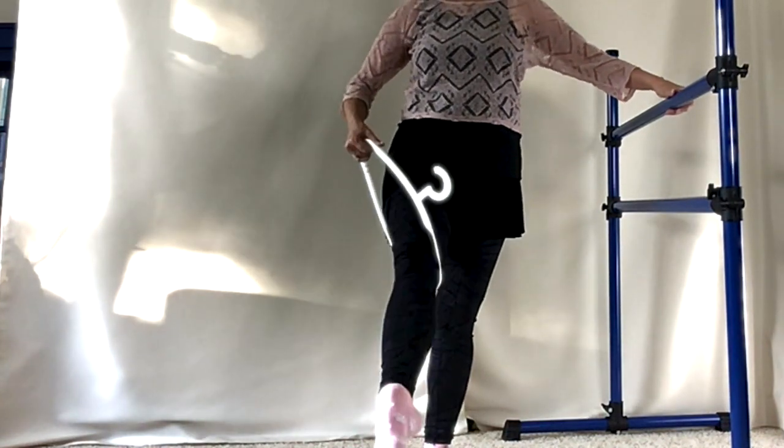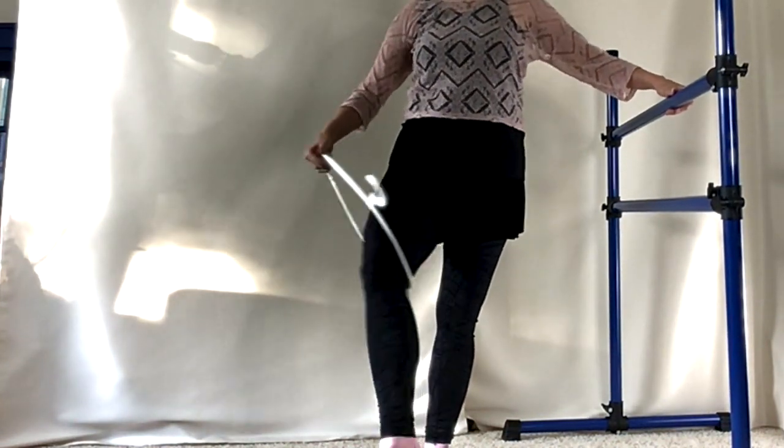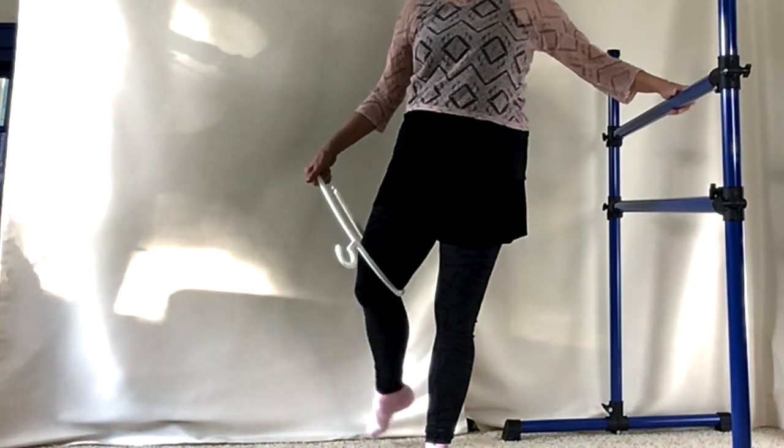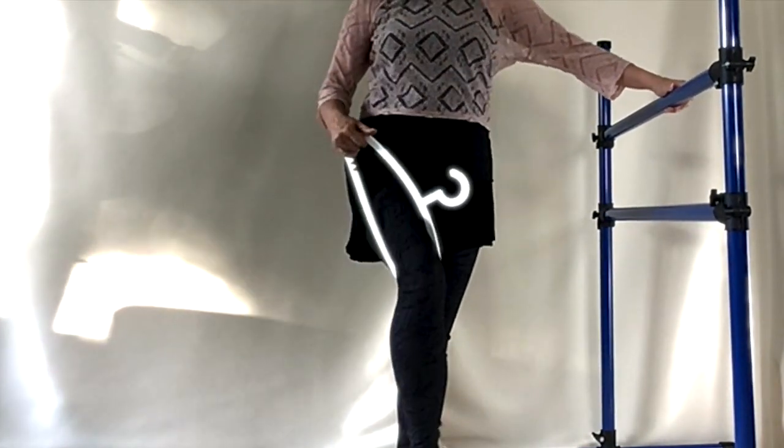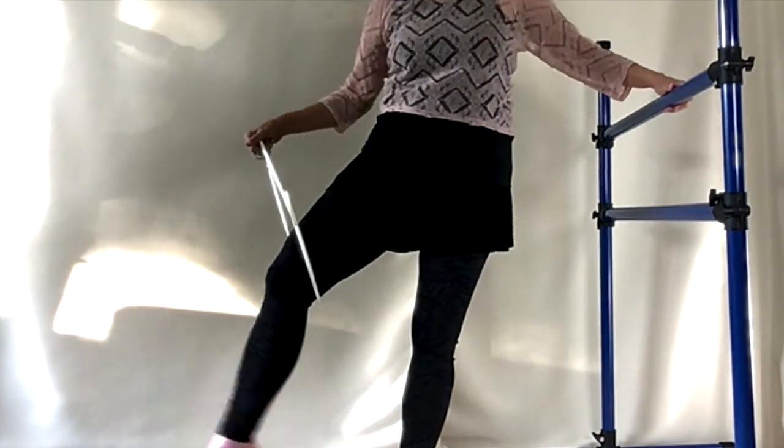When you frappé, pull the hanger back. In reverse, keep the hanger back. You don't want these frappés with your knees forward. Feel the hinge open. So now on to the combination.